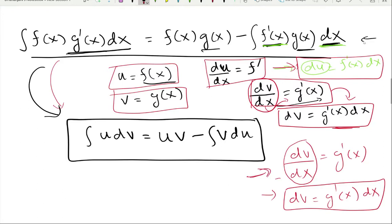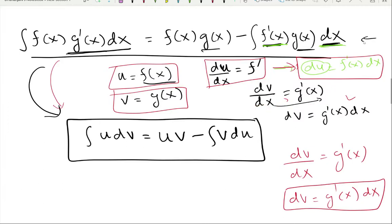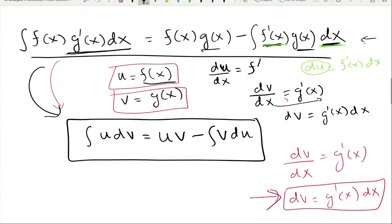Even though treating dv/dx as a fraction is technically wrong, you still end up at the correct answer. That's why everyone forgets about the abuse of notation and just treats it like a fraction. These statements come from the definition of a differential — not by treating them as fractions. But practically, you can treat it that way and get the correct result.